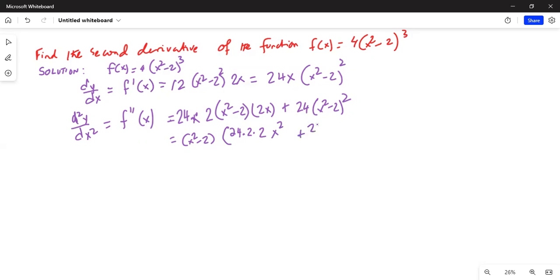24(x² - 2). So I'll keep the (x² - 2) outside, which is equal to 24 times 2 times 2 is 96x² plus 24x² minus 24 times 2 is 48.